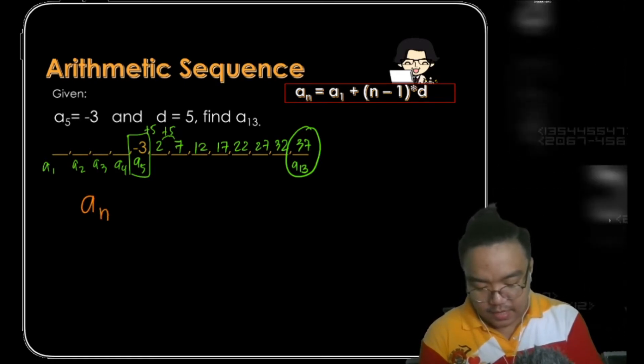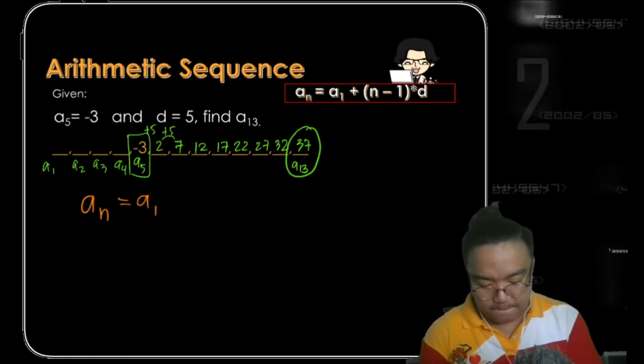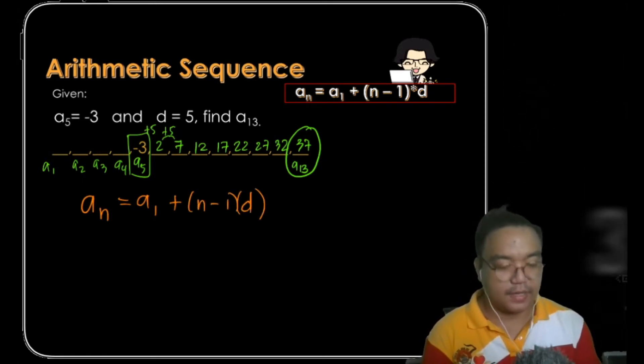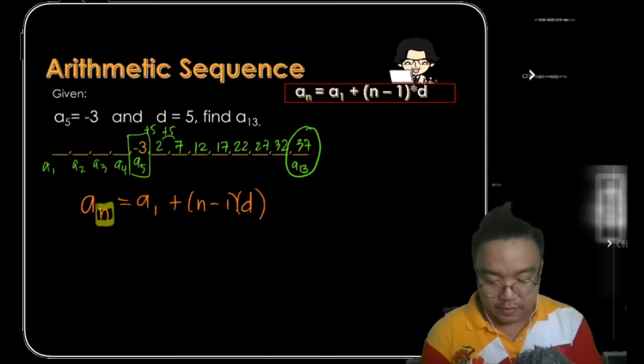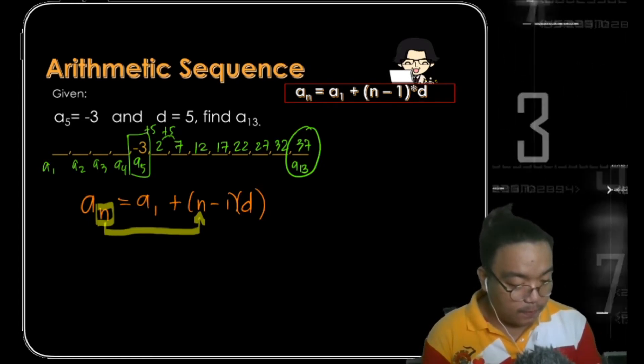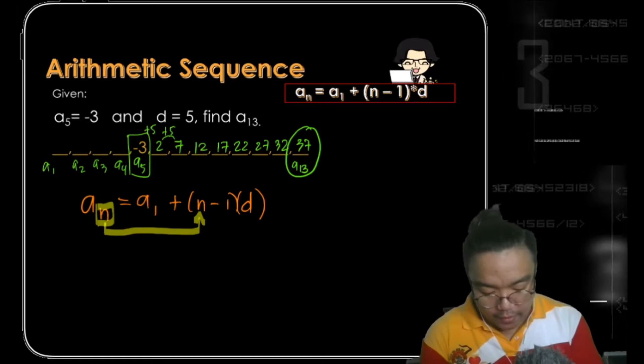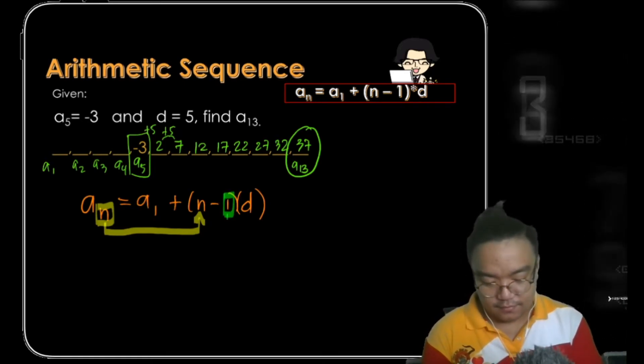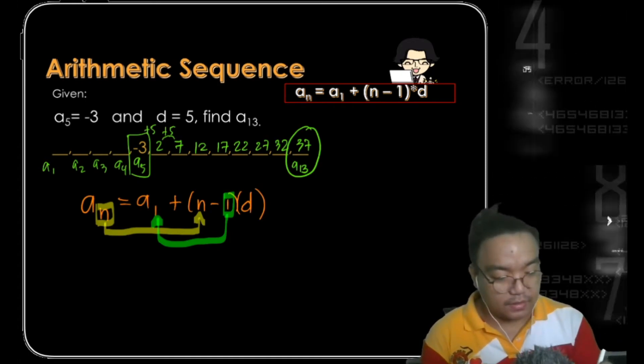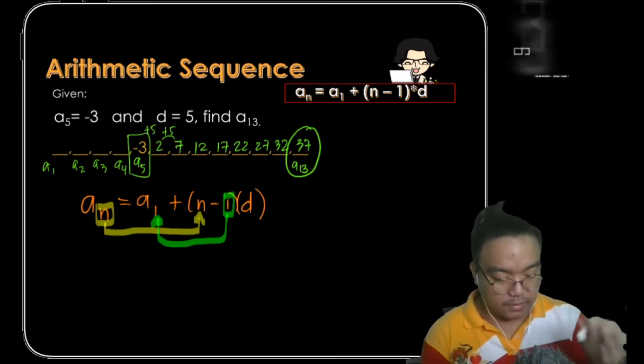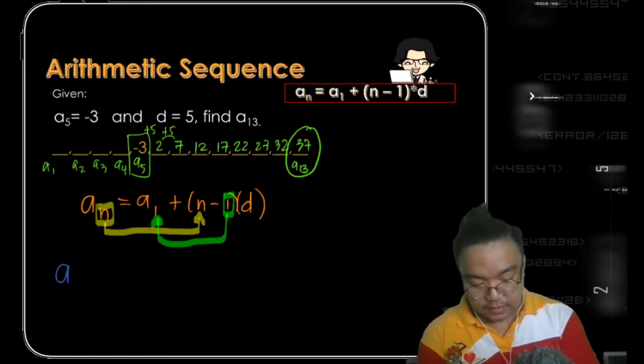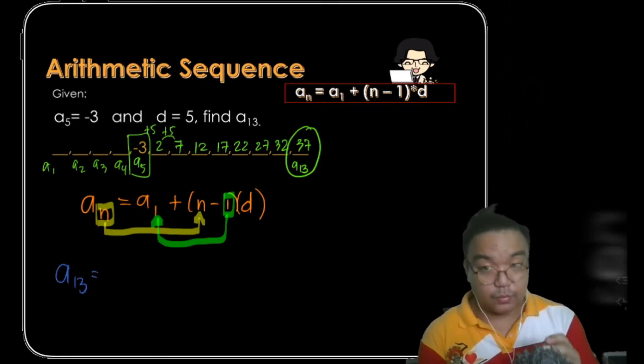There is actually a pattern. A sub n equals a sub 1 plus n minus 1 times d. Whatever the subscript, what you're looking for is associated with this n. Have you ever wondered where this one is associated from? It is associated from the subscript you're using as your first term. In simple terms, if we are going to solve this problem without using the first term...